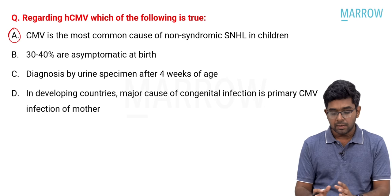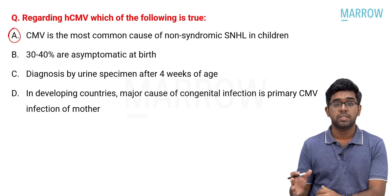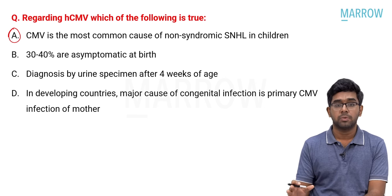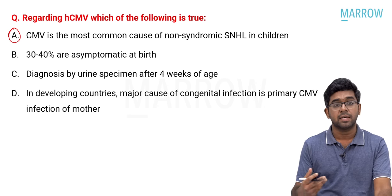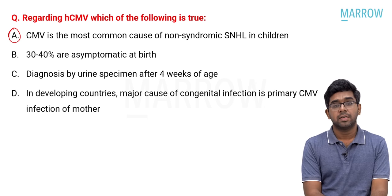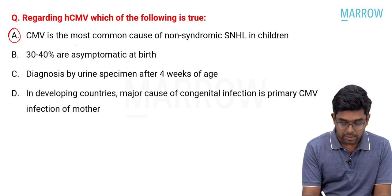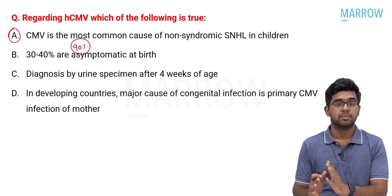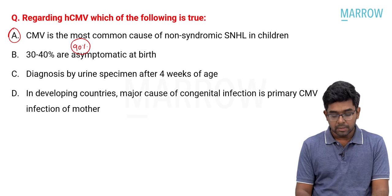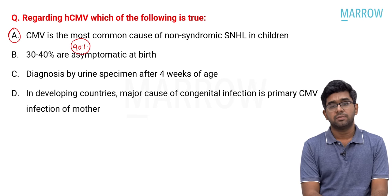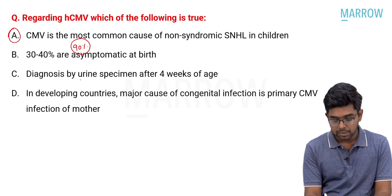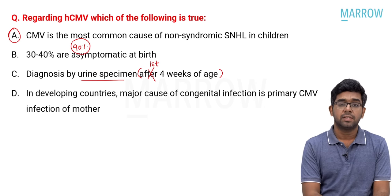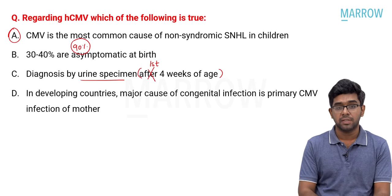The statement '30 to 40% are asymptomatic at birth' is wrong — 90% of babies are asymptomatic at the time of birth. The statement 'diagnosis by urine specimen after four weeks of age' is also wrong — diagnosis must be made within the first four weeks after birth. Urine is the best specimen, not blood. The test used is viral culture or CMV culture, which is the best investigation for diagnosis of congenital CMV infection.